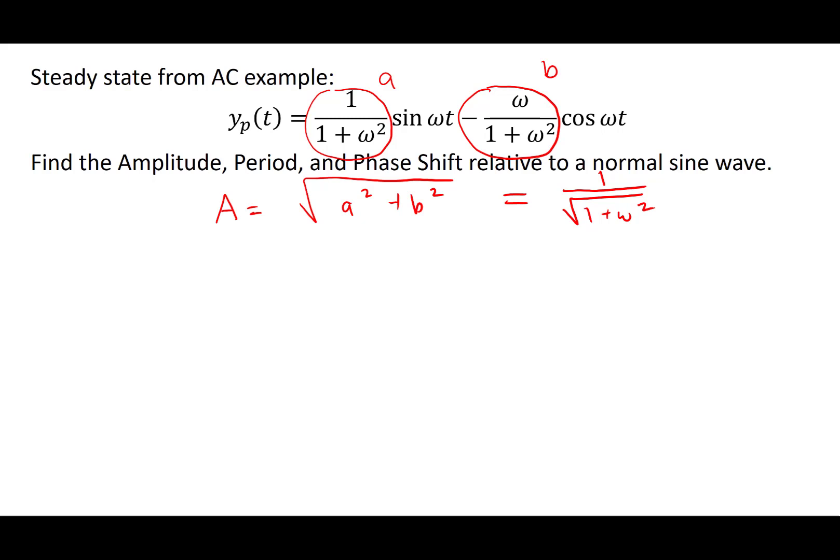For the phase shift, we use the formula that d is the arctangent of -b/a, which results in the simple formula that d, in this case, is the arctangent of ω.